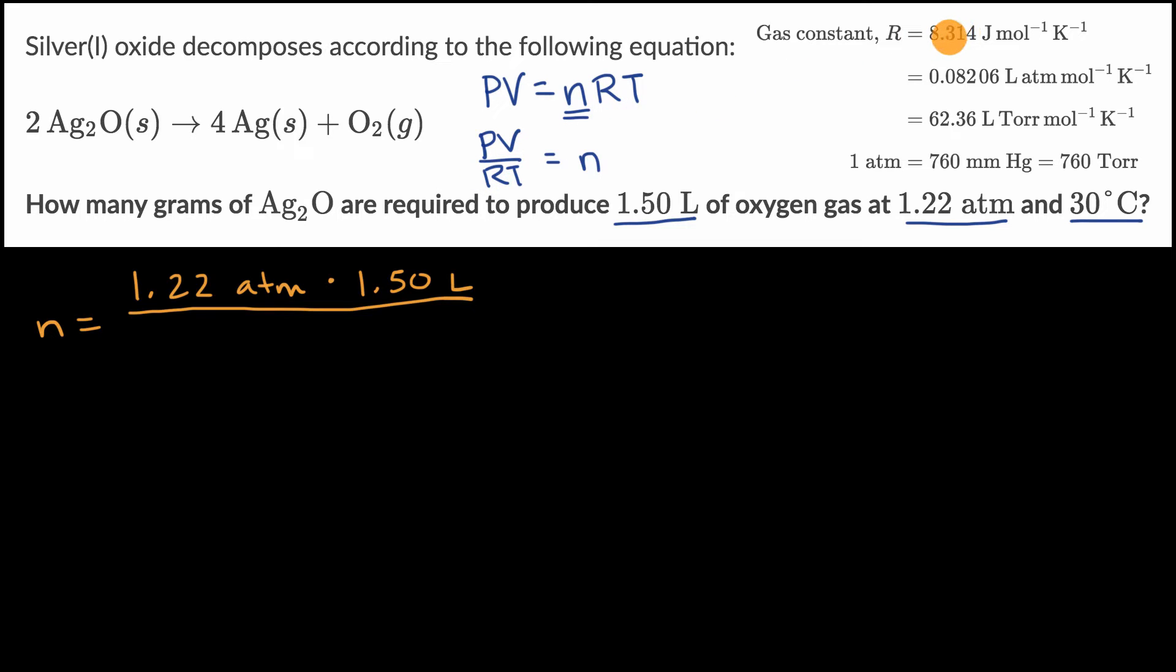We have to use the right one that deals with atmospheres, liters, and Kelvin. So we'll use this ideal gas constant: 0.08206 liters·atmospheres per mole·Kelvin.